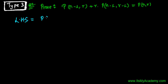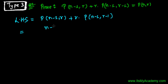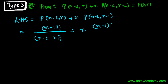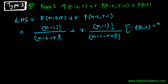So it's P(n−1, r) plus r times P(n−1, r−1). Now I'll apply the simple formula: n minus 1 factorial divided by n minus 1 minus r factorial, plus r times n minus 1 factorial divided by n minus 1 minus (r minus 1) factorial. Note that when the minus comes in front, the minus 1 and plus 1 cancel to give plus. The formula used is P(n,r) = n factorial divided by n minus r factorial.